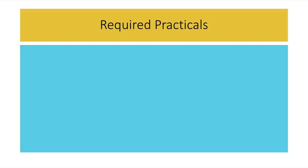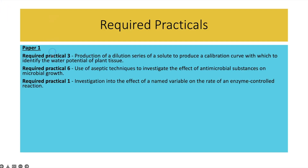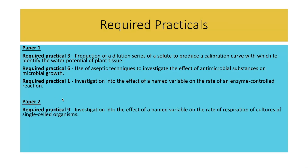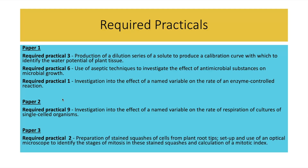This is for AQA A-level biology and they have stated which required practicals are coming up on each paper, and it will only be those required practicals. You might get other general practical skills to do with picking equipment, analysing data, and evaluating methods, but it will only be these practicals. Paper one will be required practicals three, six, and one. Paper two is required practical nine, and paper three is required practical two.